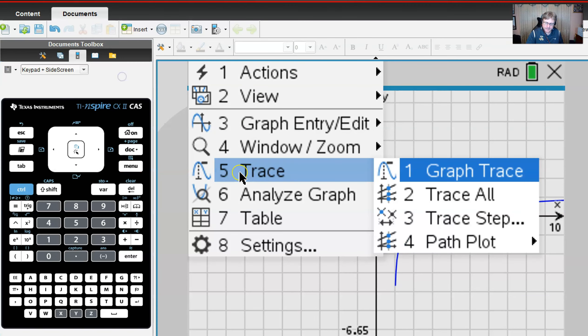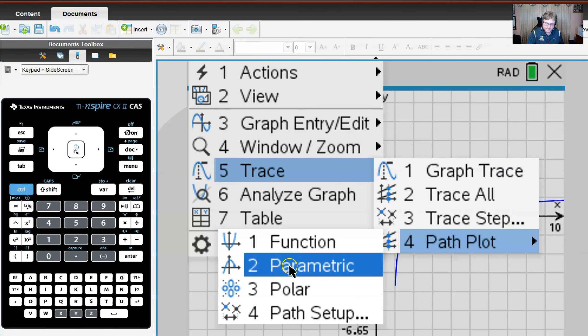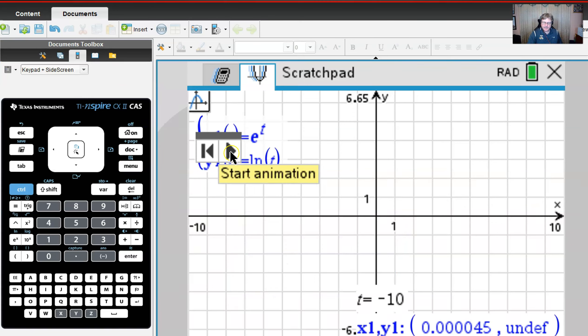Another cool way you could do this if you have the TI Inspire 2 is you could play the path plot for parametric and you can see how this curve is going to be sketched. However, we're going to be waiting here an awful long time because I let my t value go from negative 10.